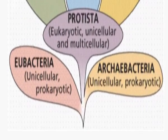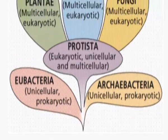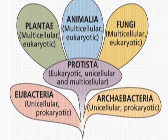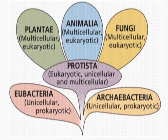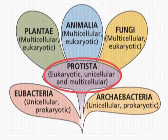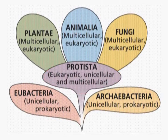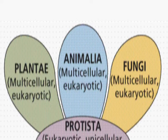The Monerans were the first organisms to come on this earth. These are prokaryotic unicellular organisms, whereas all others are eukaryotic. Protoctista or Protista are unicellular but eukaryotic — that is, the cell organelles are defined and enclosed by a membrane. Plantae, Animalia, and Fungi on the other hand are all multicellular organisms and are eukaryotes.